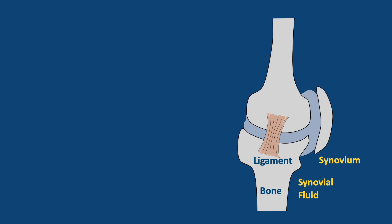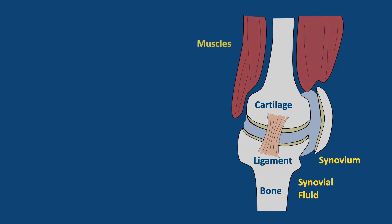Thin layers of tough, slippery tissue called cartilage act as a protective cushion to allow the bones to move more freely. Muscles are attached to tendons and tendons are attached to bones. Our muscles pull on the tendons to move our joints.